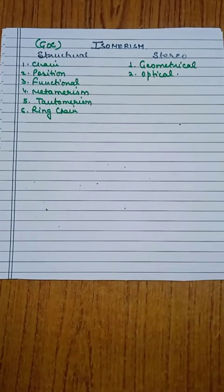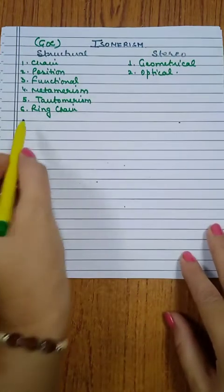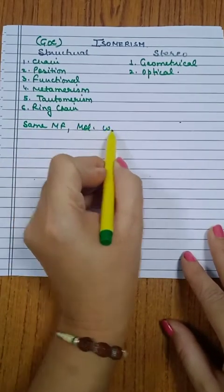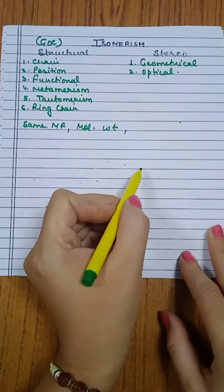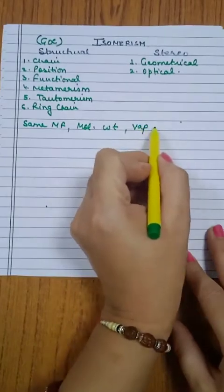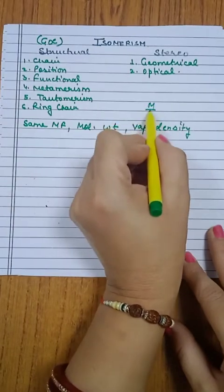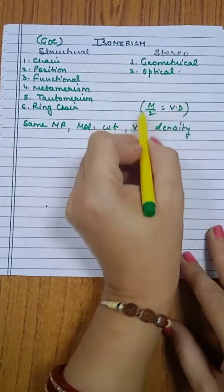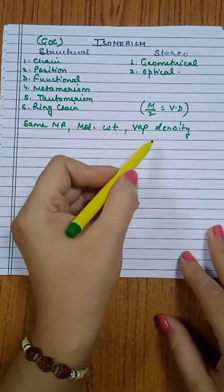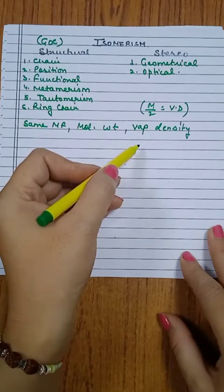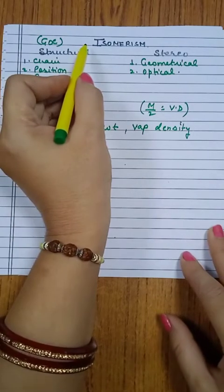When we talk about isomers, these are compounds which have the same molecular formula and therefore the same molecular weight. Since they have the same molecular formula they must have the same vapor density also, because molar mass divided by 2 equals vapor density. So all compounds having these three things the same are called isomers, and the phenomenon is known as isomerism.